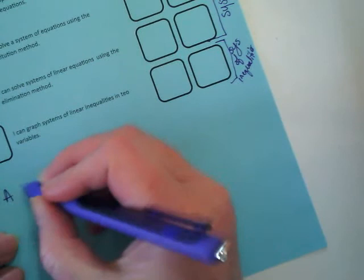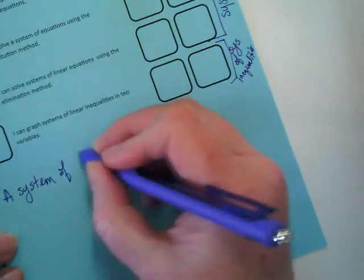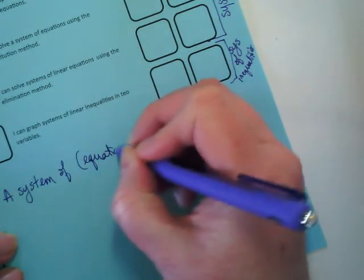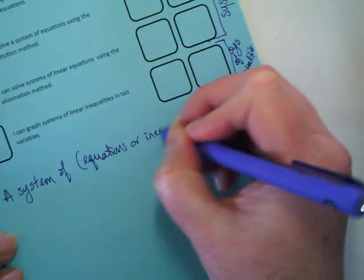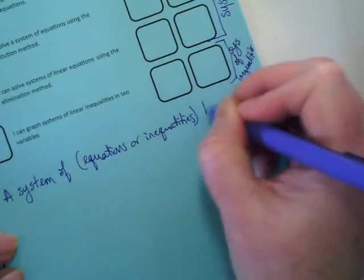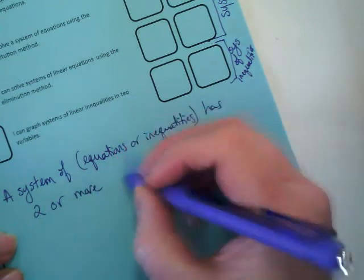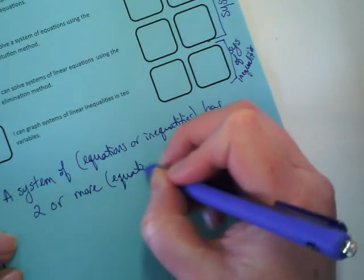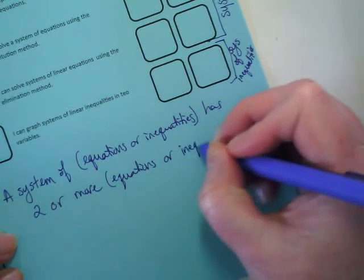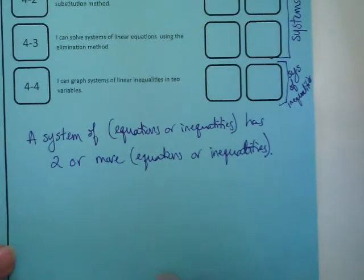We're going to put a quick definition. A system of either equations or inequalities has two or more equations or inequalities. I put that in parentheses because basically you could take either one of those words and make this statement true. A system of equations has two or more equations. A system of inequalities has two or more inequalities.